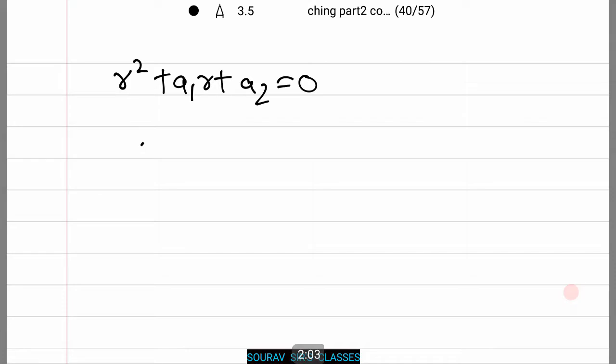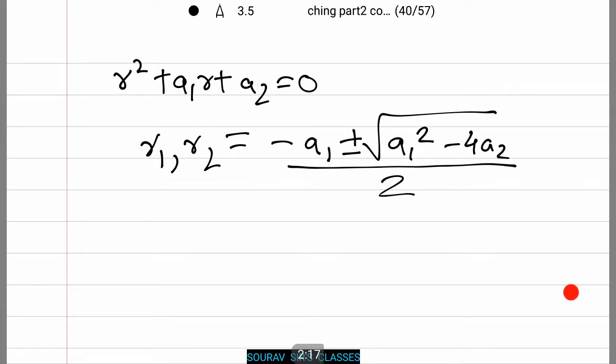Now we find the characteristic roots r₁ and r₂ by the formula: minus a₁ plus or minus square root of (a₁ squared minus 4a₂) whole divided by 2, since the value of a over here is 1.